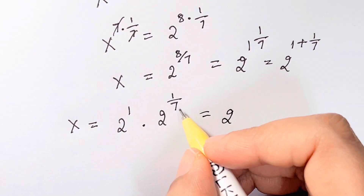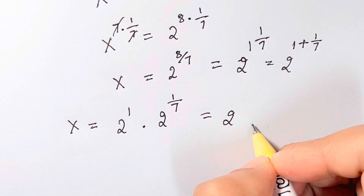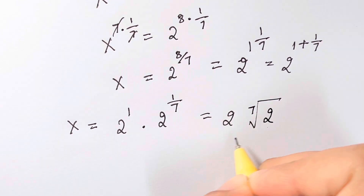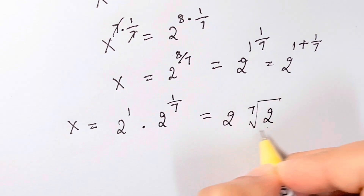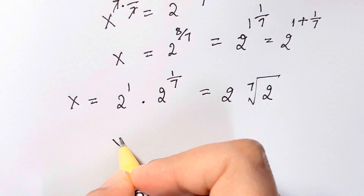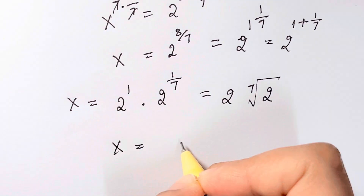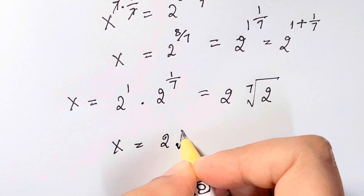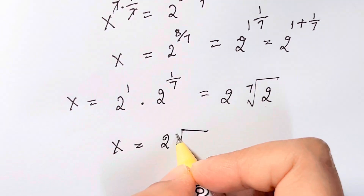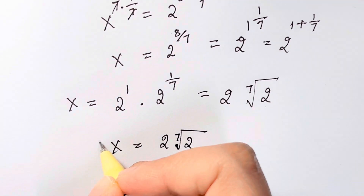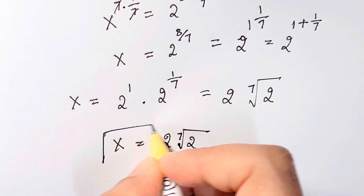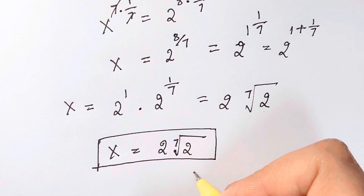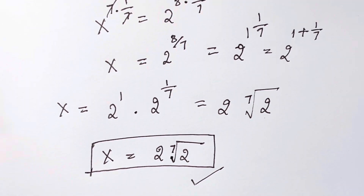So this becomes 2 times the 7th root of 2. That's the answer: x equals 2 times the 7th root of 2. Don't forget to subscribe — thank you so much for watching, bye bye, take care!